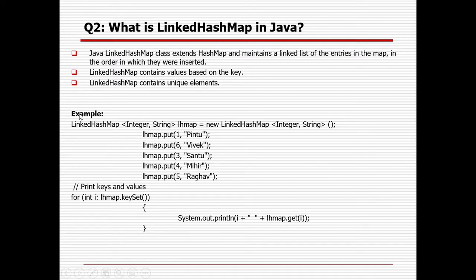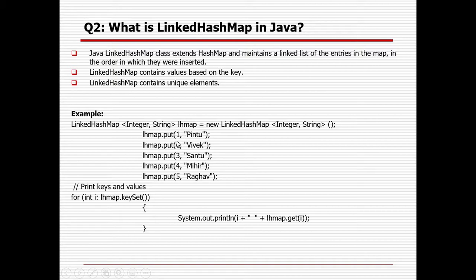The syntax for LinkedHashMap is similar to HashMap — provide data types for keys and values, create an object with the new keyword. Using the put method, you can add as many entries as needed, such as student roll number and name. The key should be unique and values can be duplicate. To print all keys and values, use an enhanced for loop to print each key and its corresponding value.